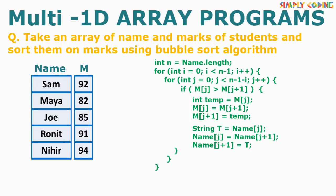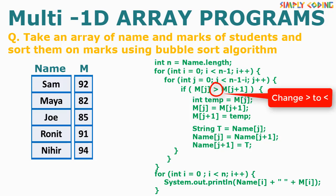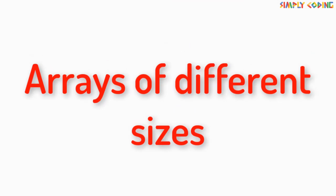After swapping, we write a separate traversal loop to print the arrays. To change sorting order from ascending to descending, the only change needed is to switch the greater-than sign to less-than. Another variation is sorting based on name: since it is a string, use compareToIgnoreCase in the comparison and check if it is greater than zero. Other than this, the whole code remains the same.